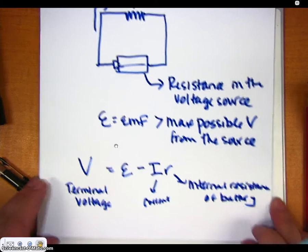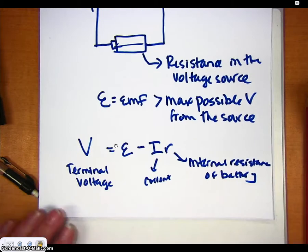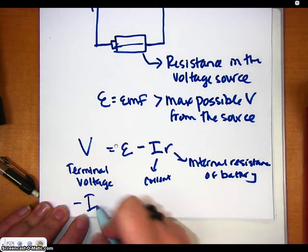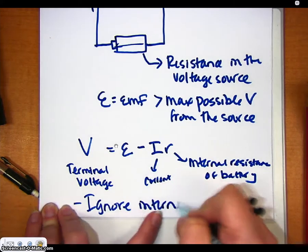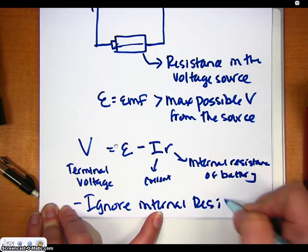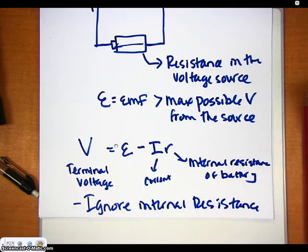problems where we're dealing with circuits, it will say to ignore internal resistance. So for most cases when we're dealing with circuits, unless it states that there is an internal resistance in the battery, you have to take it into consideration. But for most cases, we'll be ignoring internal resistance.